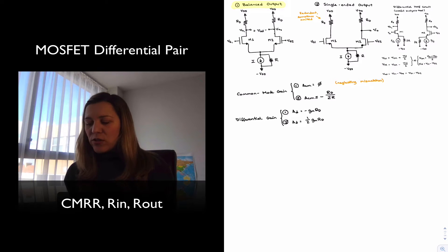Hello. So we have just calculated the common mode gain and differential gain of a balanced and single-ended output differential amplifier using MOSFET transistors, and now we can proceed with the calculation of the CMRR, the Common Mode Rejection Ratio.